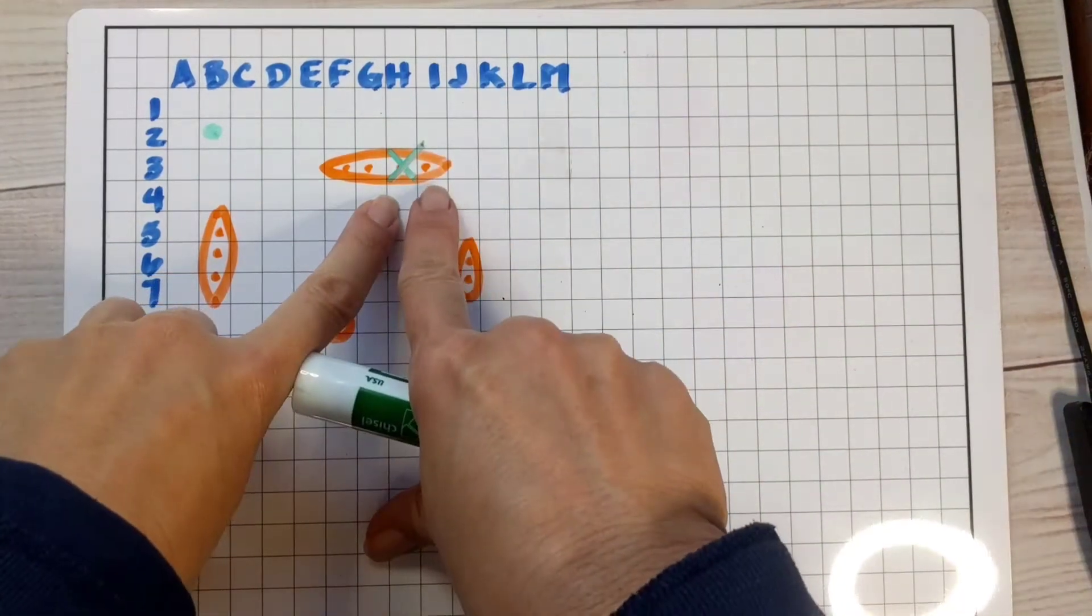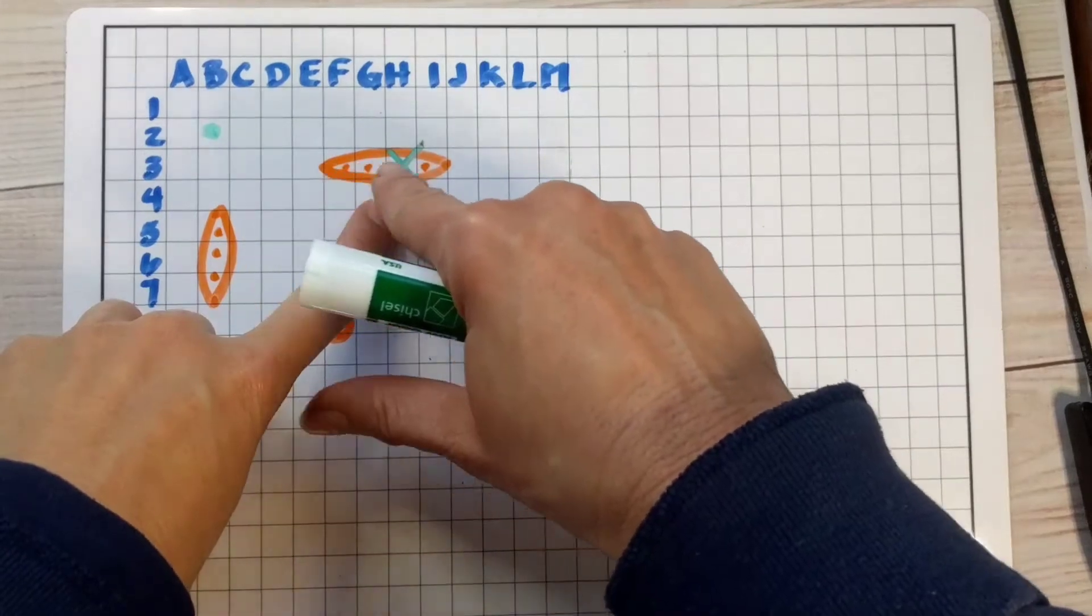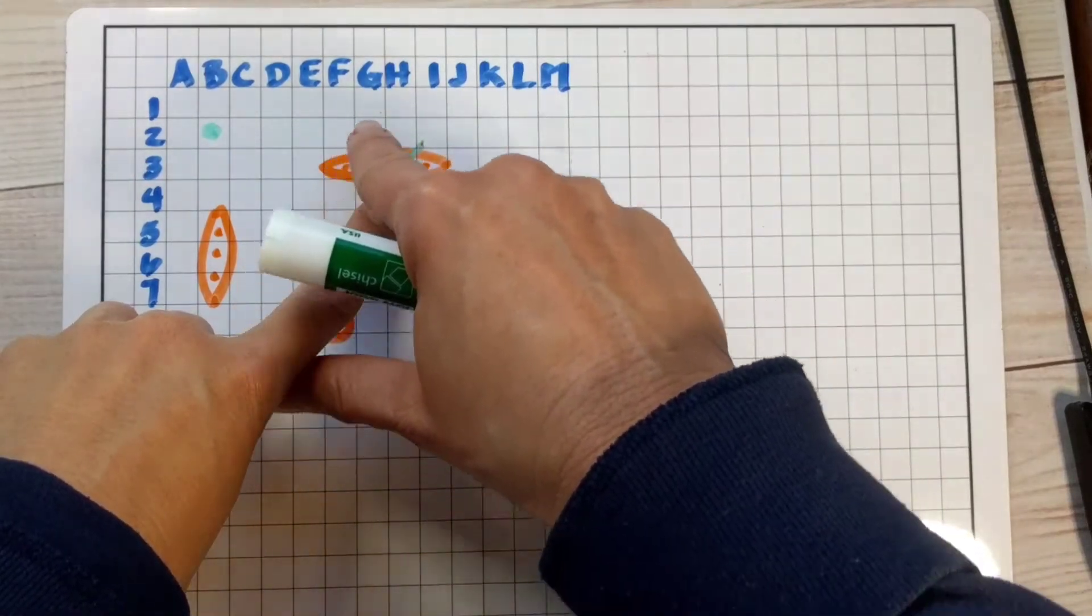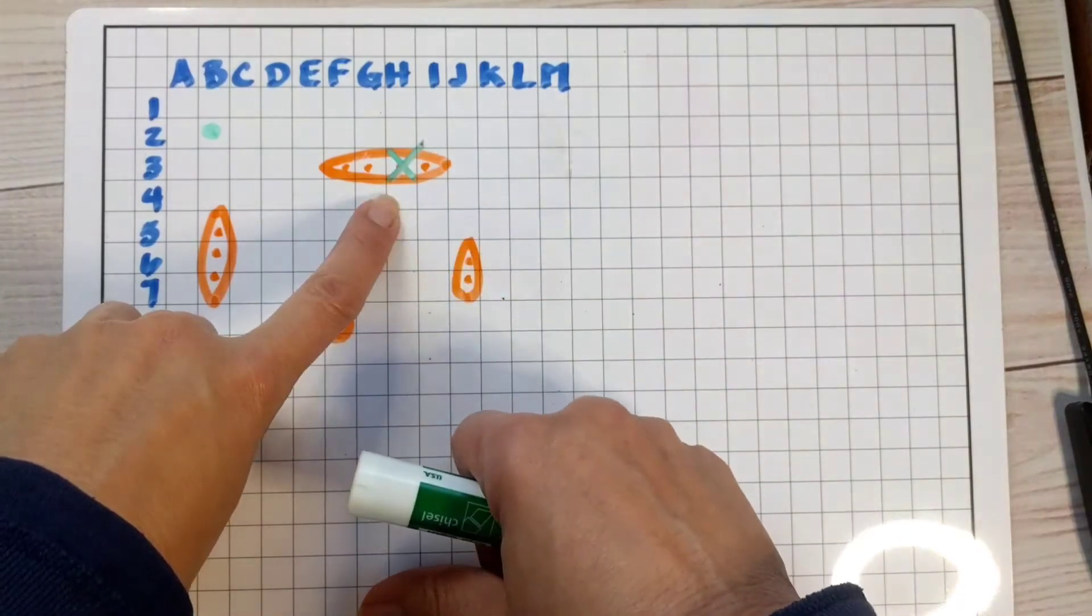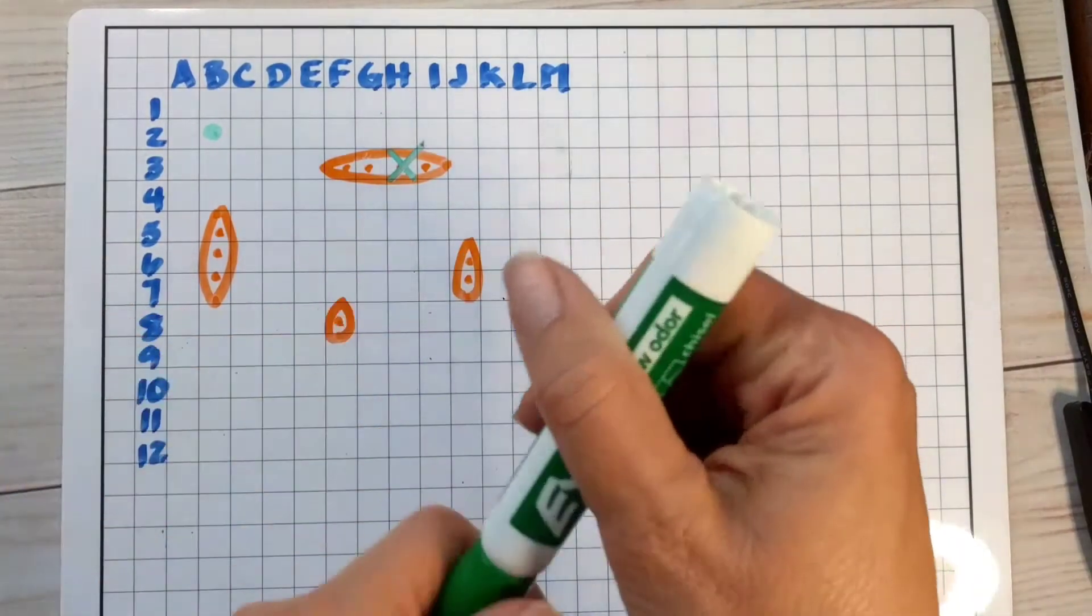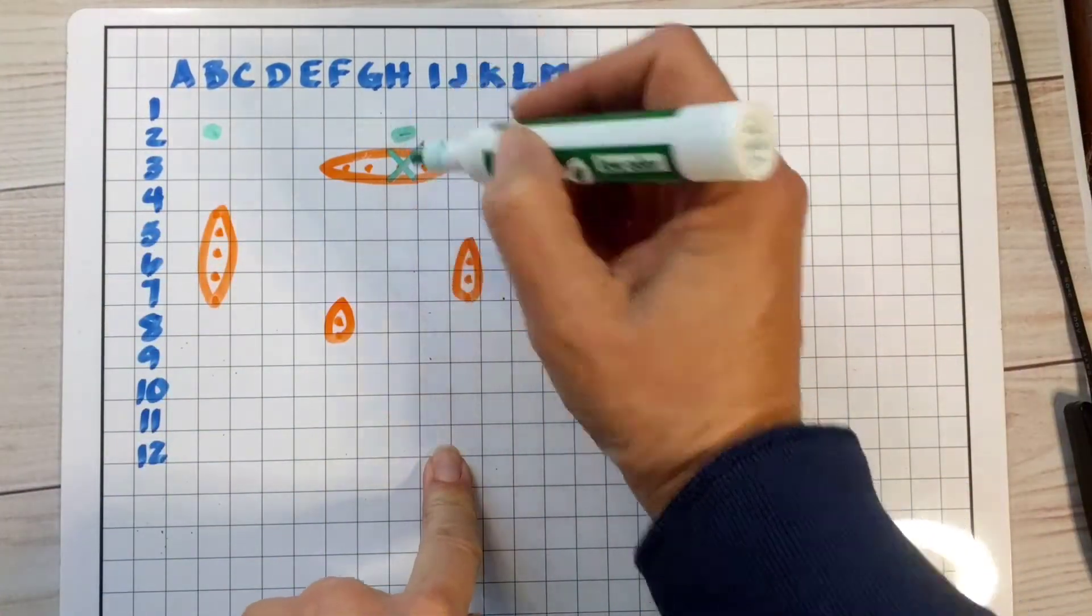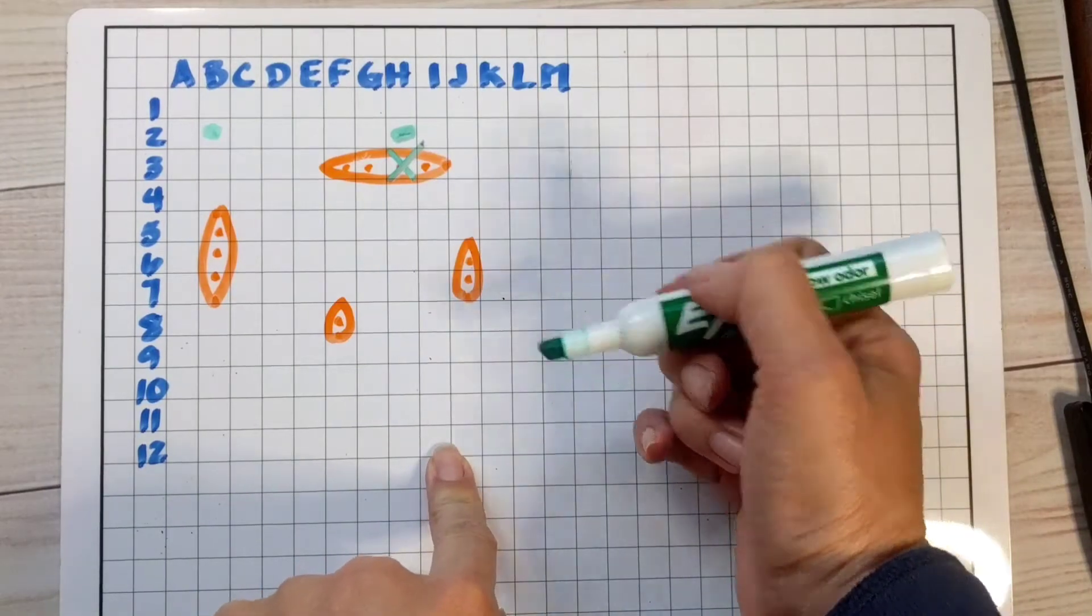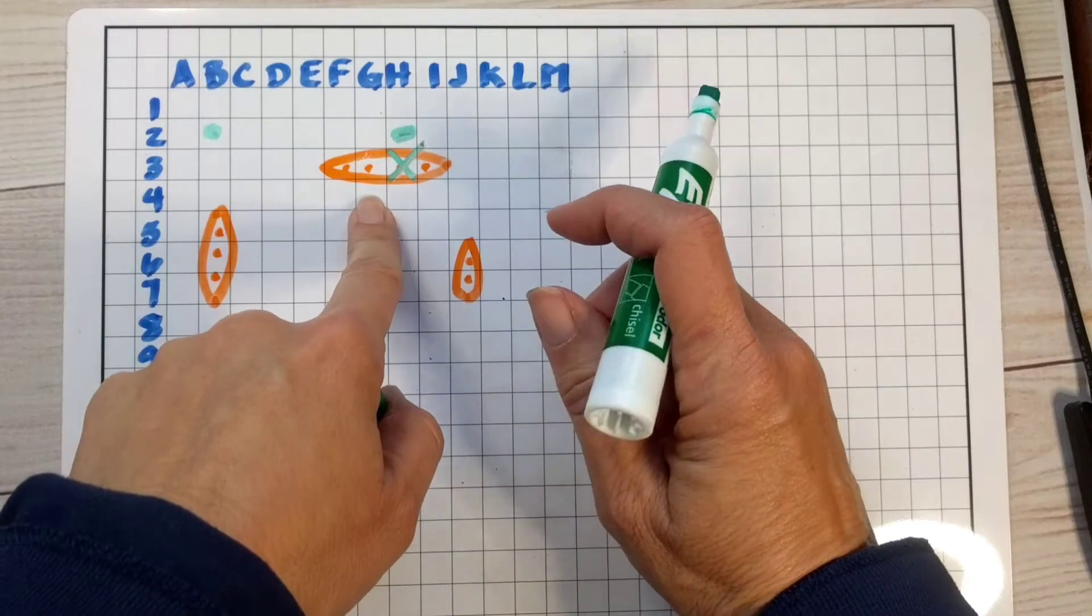But now the person playing the game knows, alright, so either the boat is going this way or this way, and so I'm going to choose coordinates that are near the hit that I've already made. And so maybe the next one they'll call out will be H2, and you'll say no, hit. Then they know, okay, so it's not going that way.